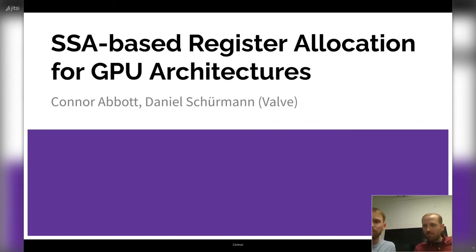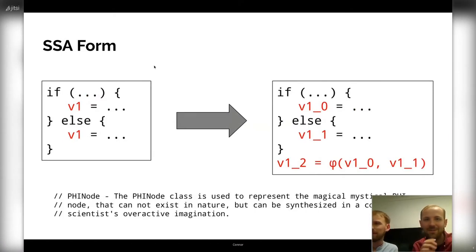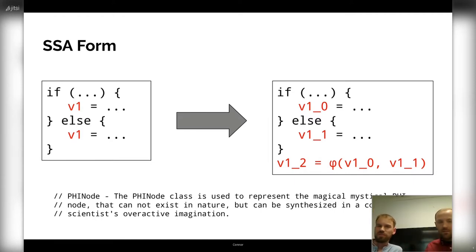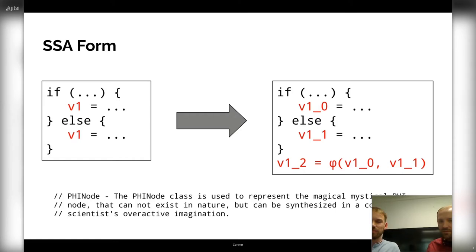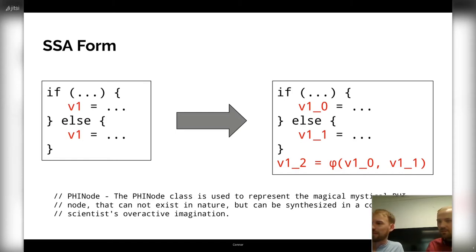Before we jump into the register allocation stuff, let us quickly recap the SSA form. SSA stands for Single Static Assignment, and instead of variables, we have values which are only defined once. You probably already know all this, but let us go over it anyway. So when a variable is written multiple times, we insert a so-called phi node to produce a new value that is equal to either value depending on which path the control takes. The phi node isn't a real instruction, as most computers don't have phi instructions, but it's very useful for all kinds of optimizations.